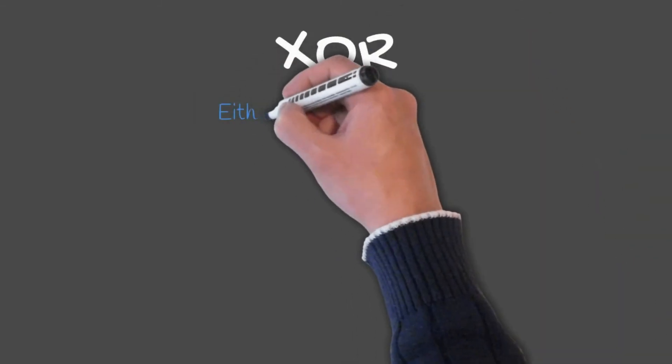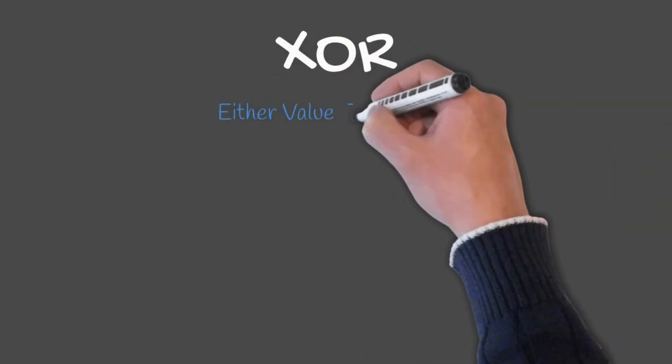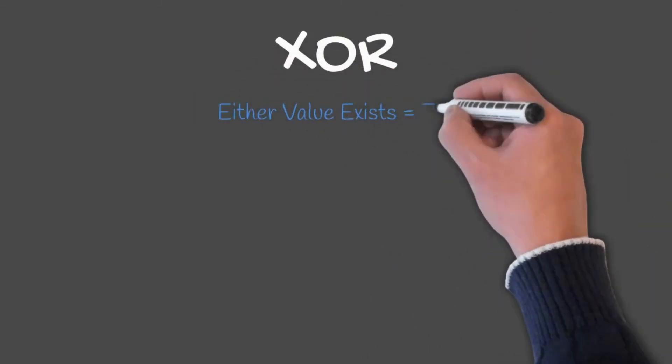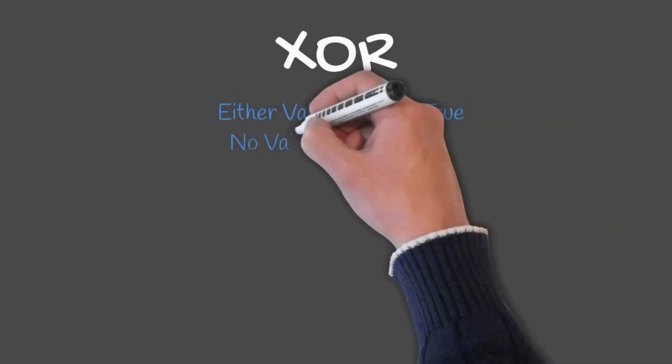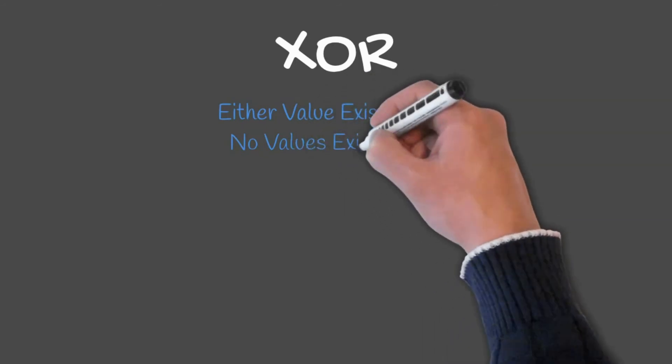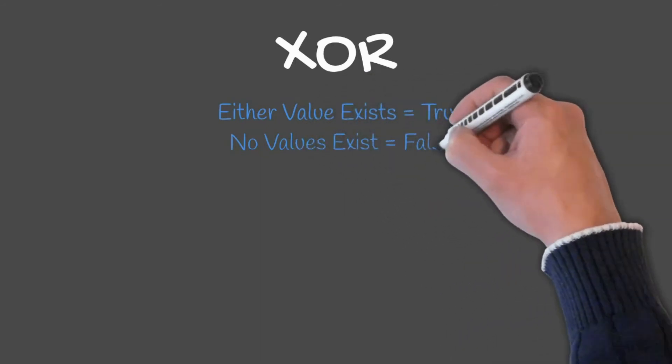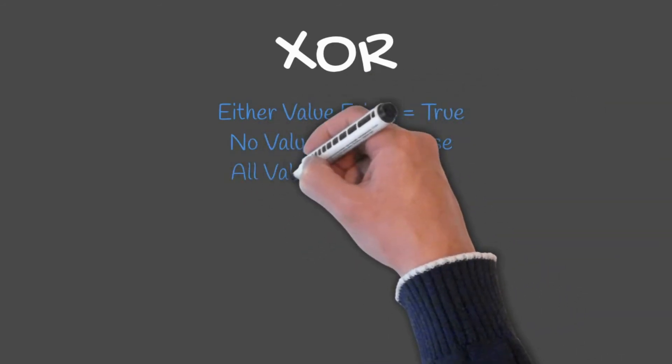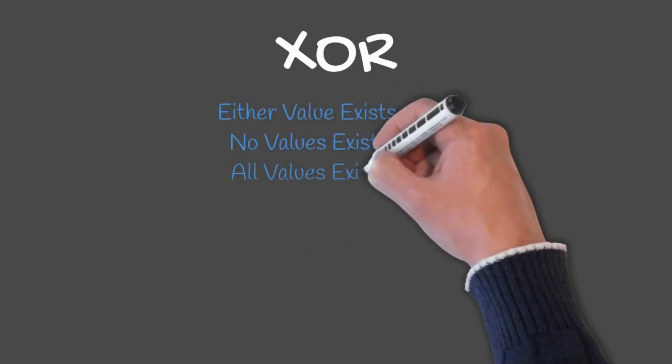XOR checks if either value exists in a statement for the statement to be true. If no value exists, or both values exist, the statement would be false.